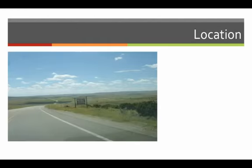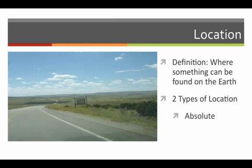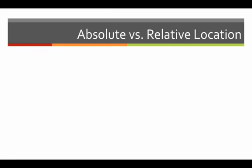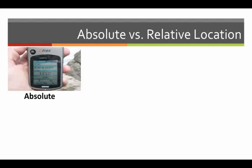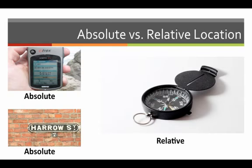The first of the five themes we will introduce is the theme of location. Location is literally where something is found on the earth. There are two types of location: absolute and relative. Absolute location is an exact point on the earth and is often measured by using lines of latitude and longitude. However, a typical street address can be an example of an absolute location as well. On the other hand, relative location is the description of a location in relation to something else. If you said your house was north of the Pee Dee River, then you are using relative location.